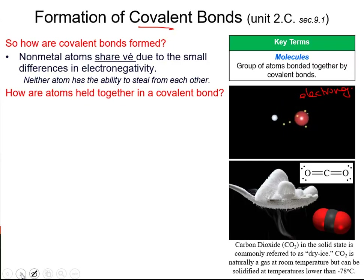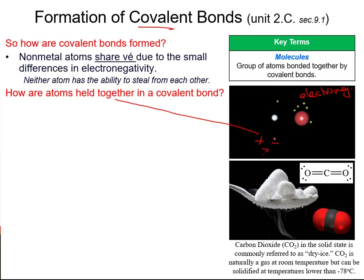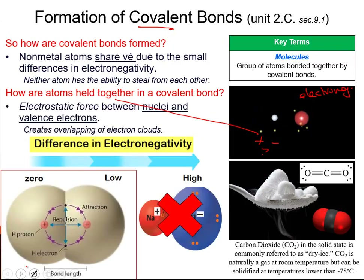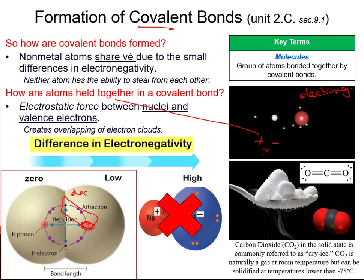So how are atoms essentially held together if they're sharing? Because holding things together has to involve a plus and a minus. The plus and minus comes from the attraction between the nuclei of one atom and the valence electrons being shared from the other — this is the Coulombic attraction, the electrostatic force that comes from covalent bonding.